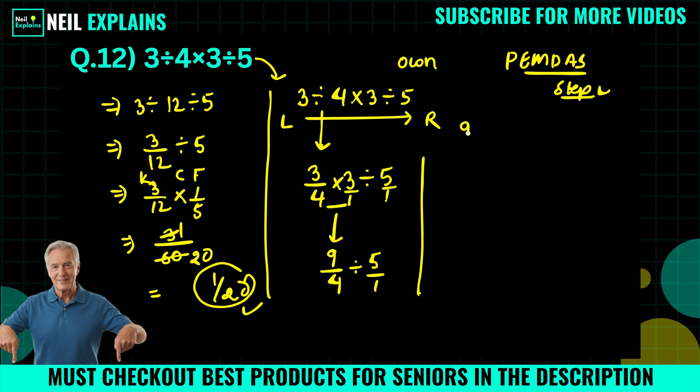Now 9 by 4 divided by 5 by 1. So we will use KCF here. We will keep 9 by 4 as it is. This division is changed to multiplication and 5 by 1 will become 1 by 5.